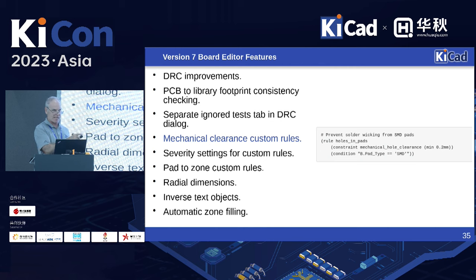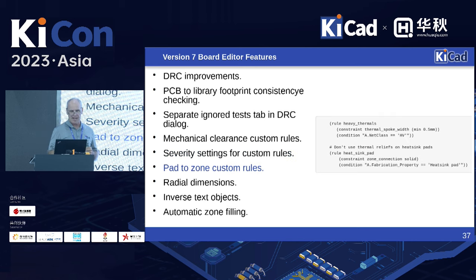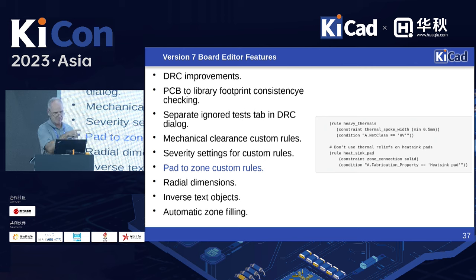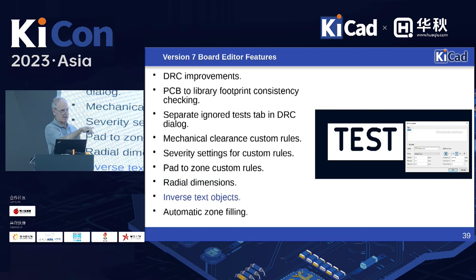We added a few new custom rules in version 7. You can now add mechanical custom rule clearances. You can set the severity — before, if you violated a custom rule it was always an error; now you can set it to a warning or something less severe. There's now a pad-to-zone rule for things like thermal fills. We added radial dimensions — previously we only supported linear dimensions. There's now an inverse text object — the white would be copper and the text would be the absence of copper.